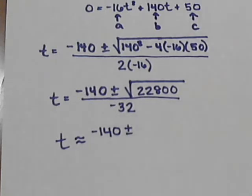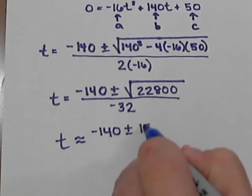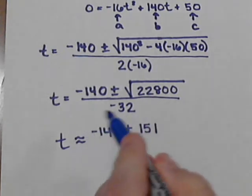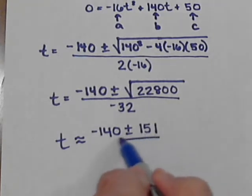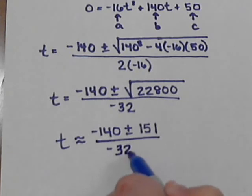The square root of 22,800 is about 151. It came out 150.9966, so it's pretty close. We'll just call it 151 over negative 32.